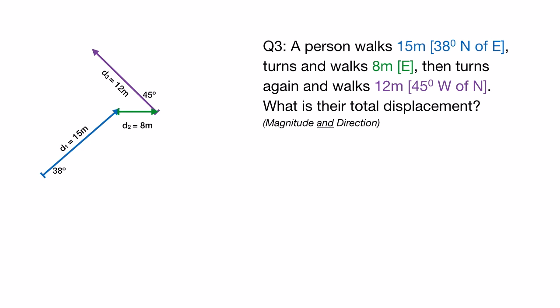In order to solve these problems we need to break up all our vectors into their x and y components. So I'm going to add some dotted lines to show you where the x and y components would be for each one of those vectors.